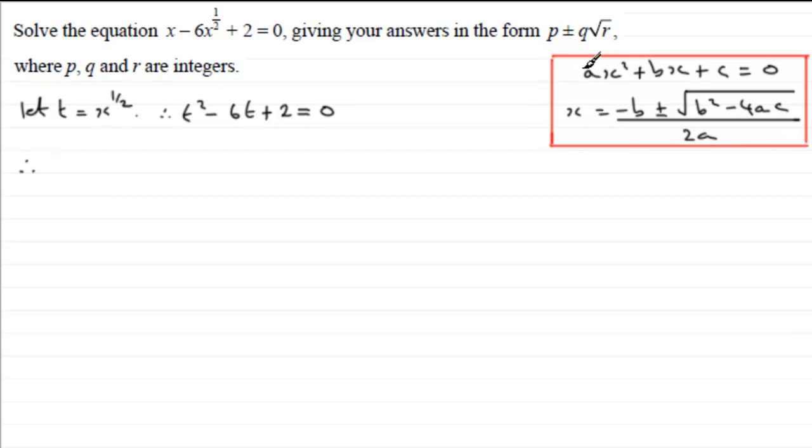We're going to use that formula here. So in our question here a is 1, b is minus 6, and c is 2. So it's going to be t equals, or you don't have to change this to t's, you could just leave it as x to the half, it's up to you.